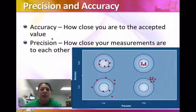Accuracy is how close you are to the accepted value. For example, water has a density of one gram per milliliter. If you're trying to prove that, if your answer is close to one gram per milliliter, then we would say you were really accurate.